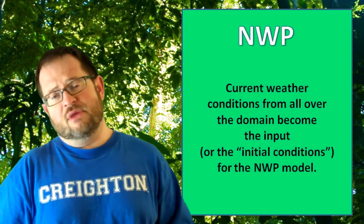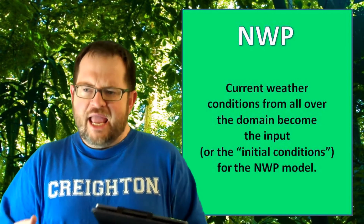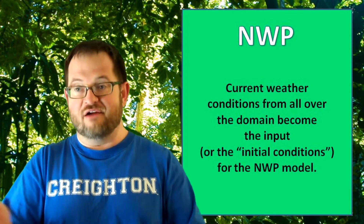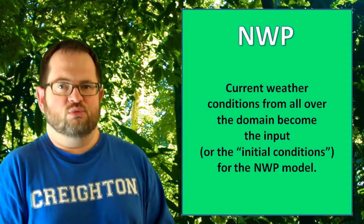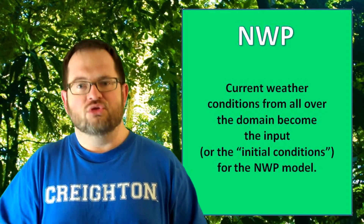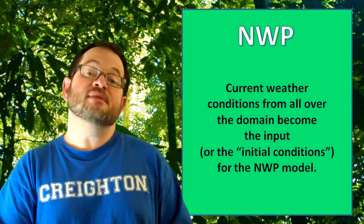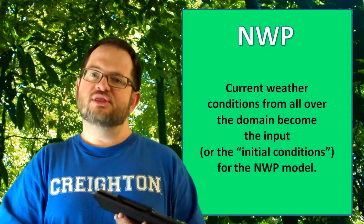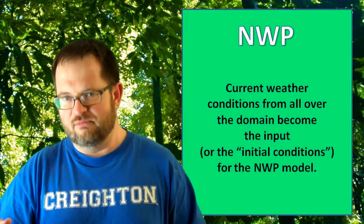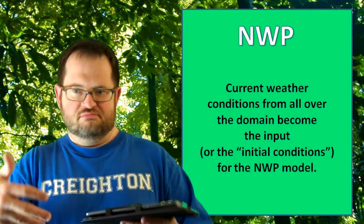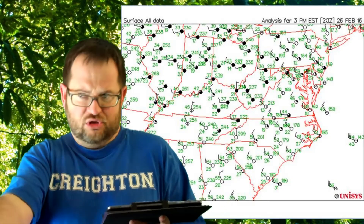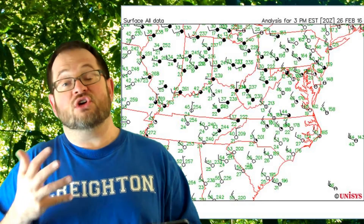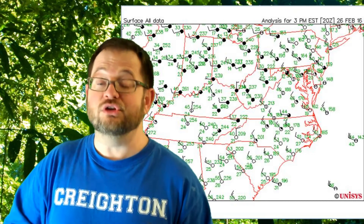When you want to run one of these numerical weather prediction models, like any computer program, it requires input. The input to a numerical weather prediction model is current observations of the weather from all over the domain. This is part of the reason why we collect weather observations at official federal weather stations all around the world — these observations form the input to the seven primitive equations. You start at every grid point with the current temperature, pressure, and winds. The set of these current observations forms what is known as the initial conditions or initial values for the model.